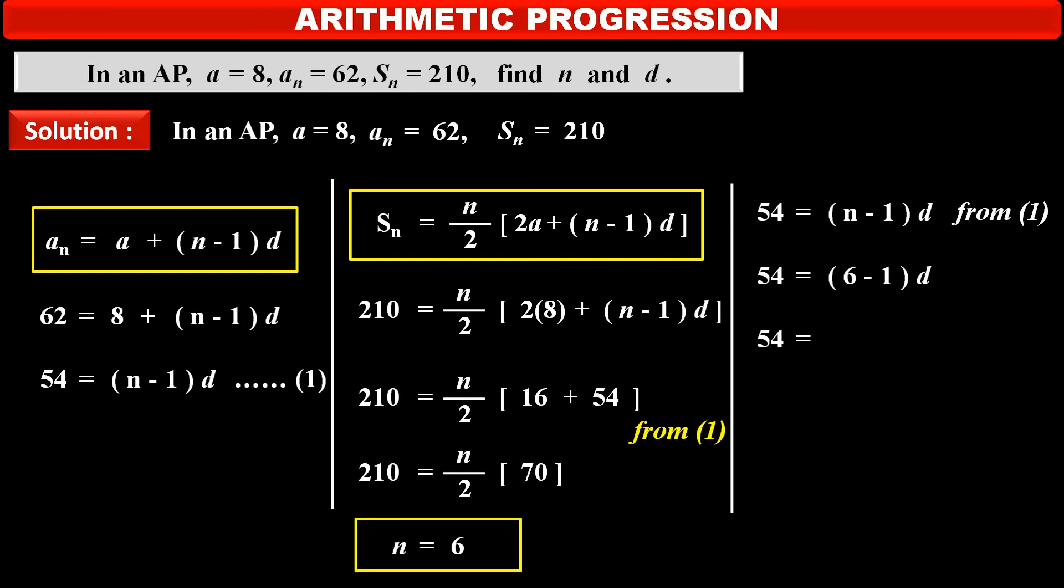So, 54 is equal to 6 minus 1, that is 5, into d, common difference d.